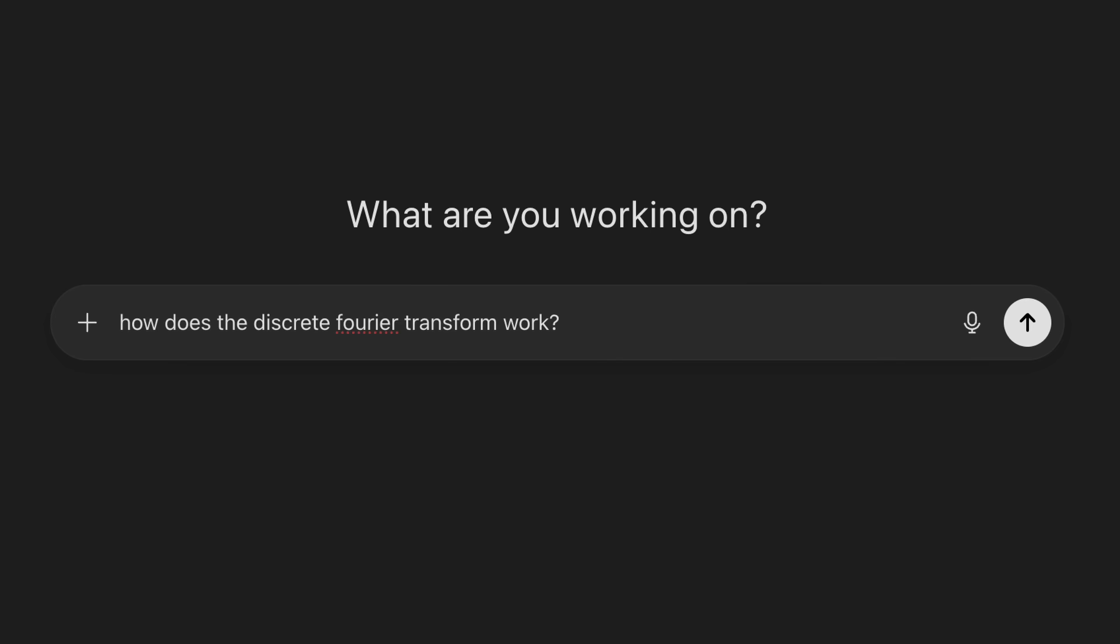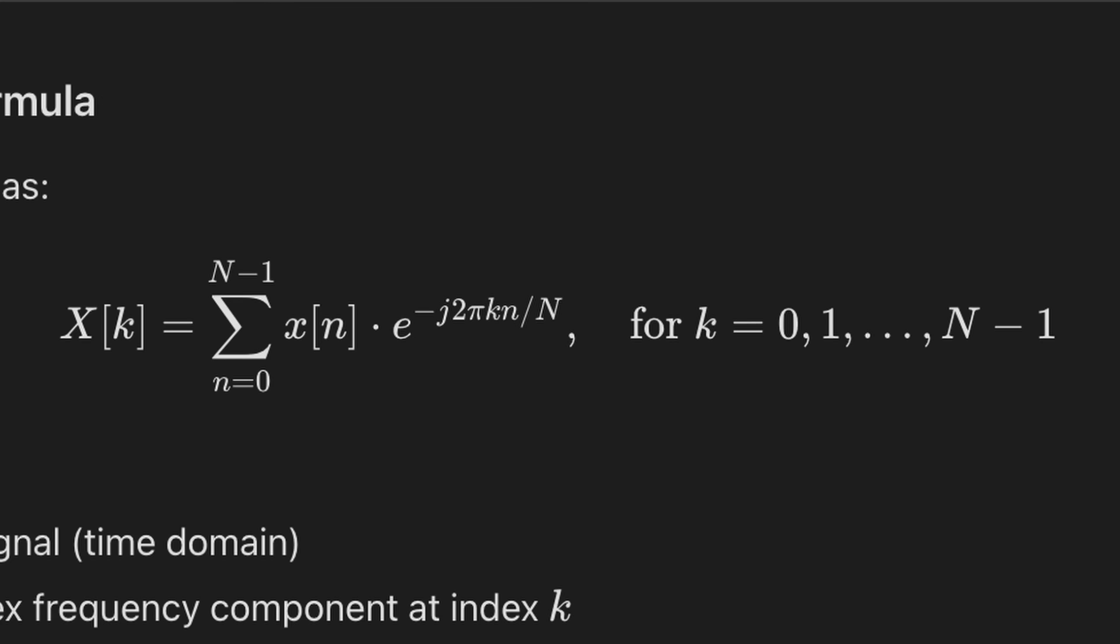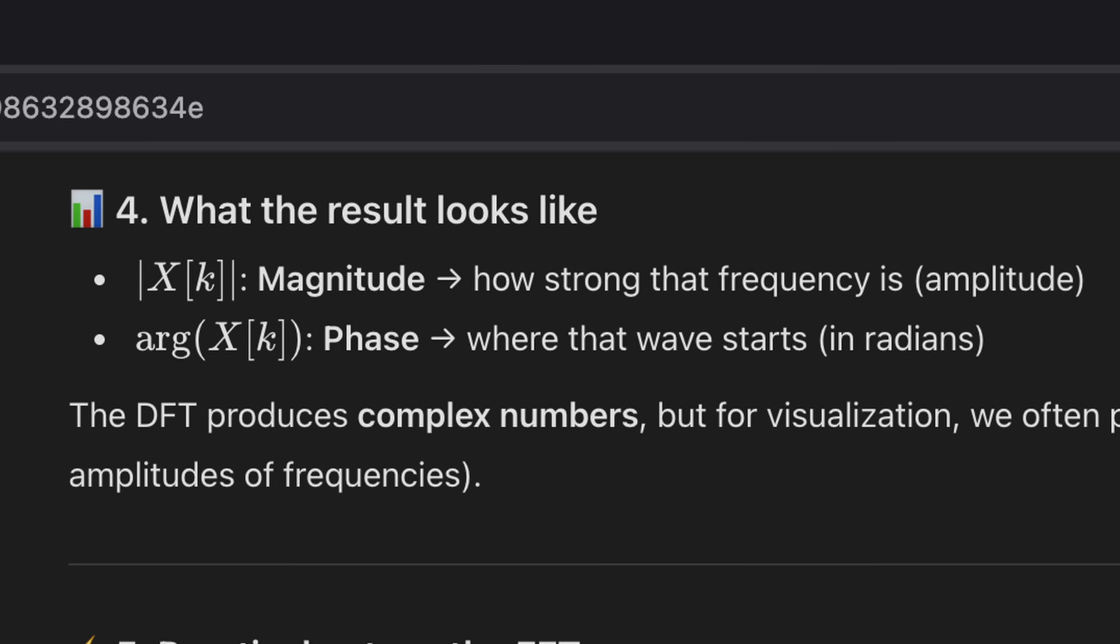For example, if I ask ChatGPT to explain how the discrete Fourier transform works, it gives me the same useless formula from Wikipedia and doesn't show any concrete examples.